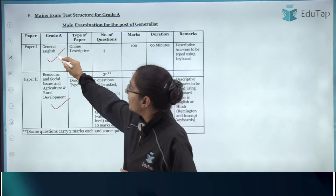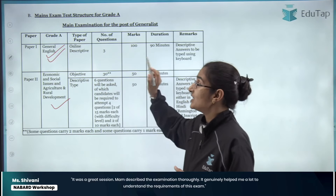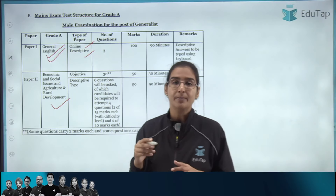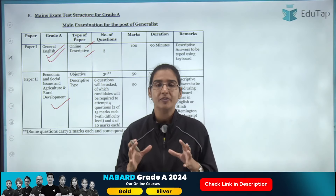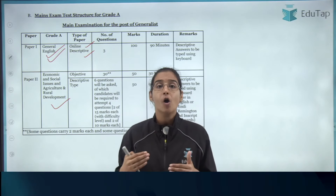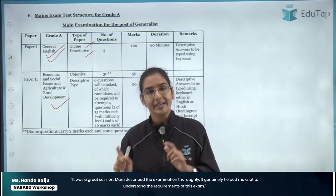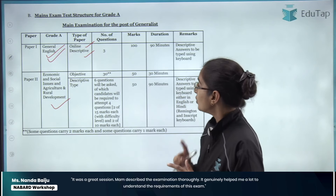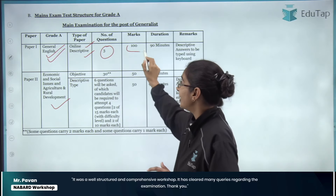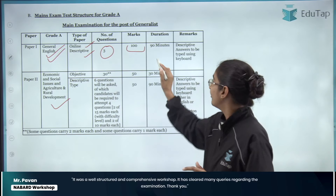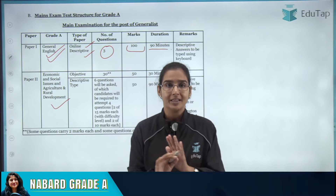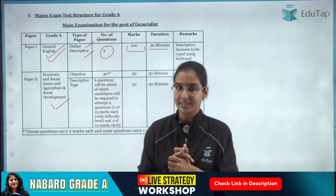In Paper 1, which is General English, the paper is going to be online and descriptive. By descriptive, it means that you have to type the paper on a keyboard — the paper is online and you type the answer on the keyboard. As far as Paper 1 is concerned, there are going to be 3 questions worth 100 marks, and for these 3 questions you will be given 90 minutes.